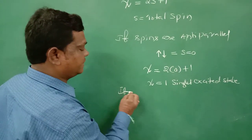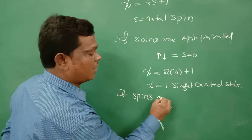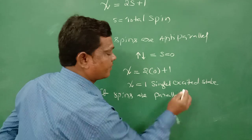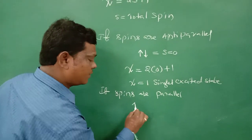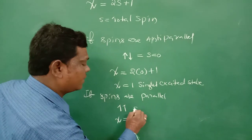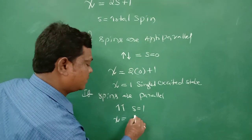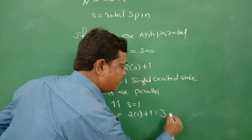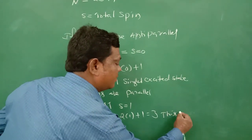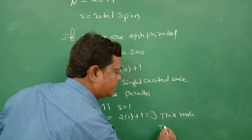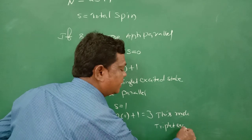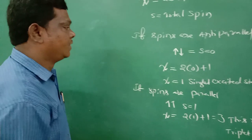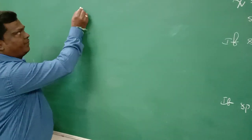If electron spins are parallel, then S is equal to 1. So chi equals 2 times 1 plus 1, which gives 3. We say that this molecule is in a triplet excited state. Spectroscopically, the singlet excited state energy S1 is greater than the corresponding triplet state energy T1.